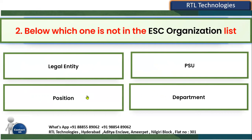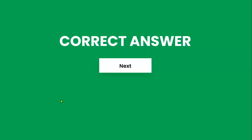Legal Entity is a legal organization. Department is also an organization. Position is NOT an organization — it comes under Workforce Structure, not under Enterprise Structure. So the correct answer is Position.